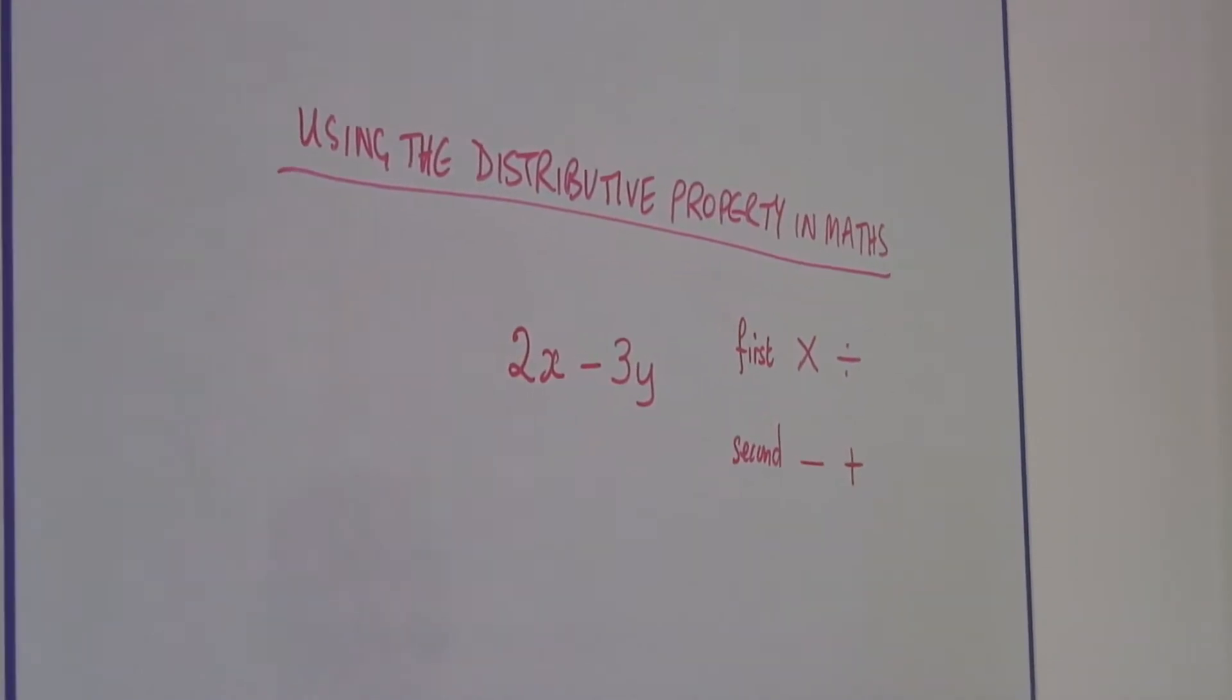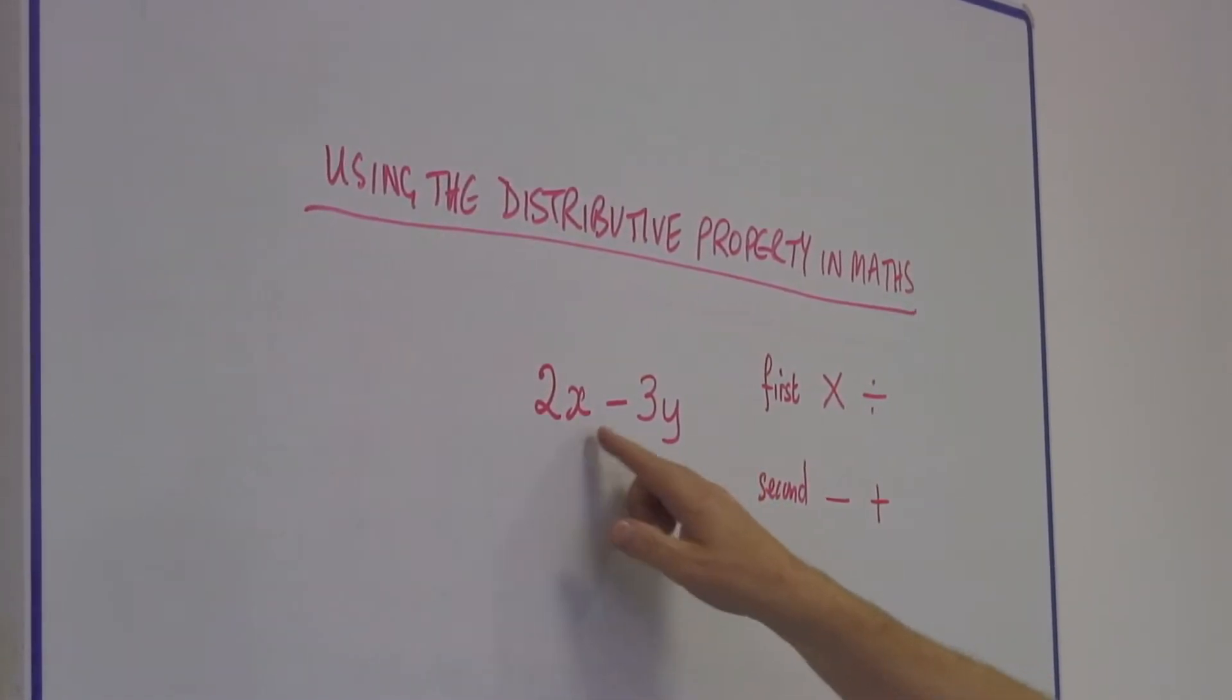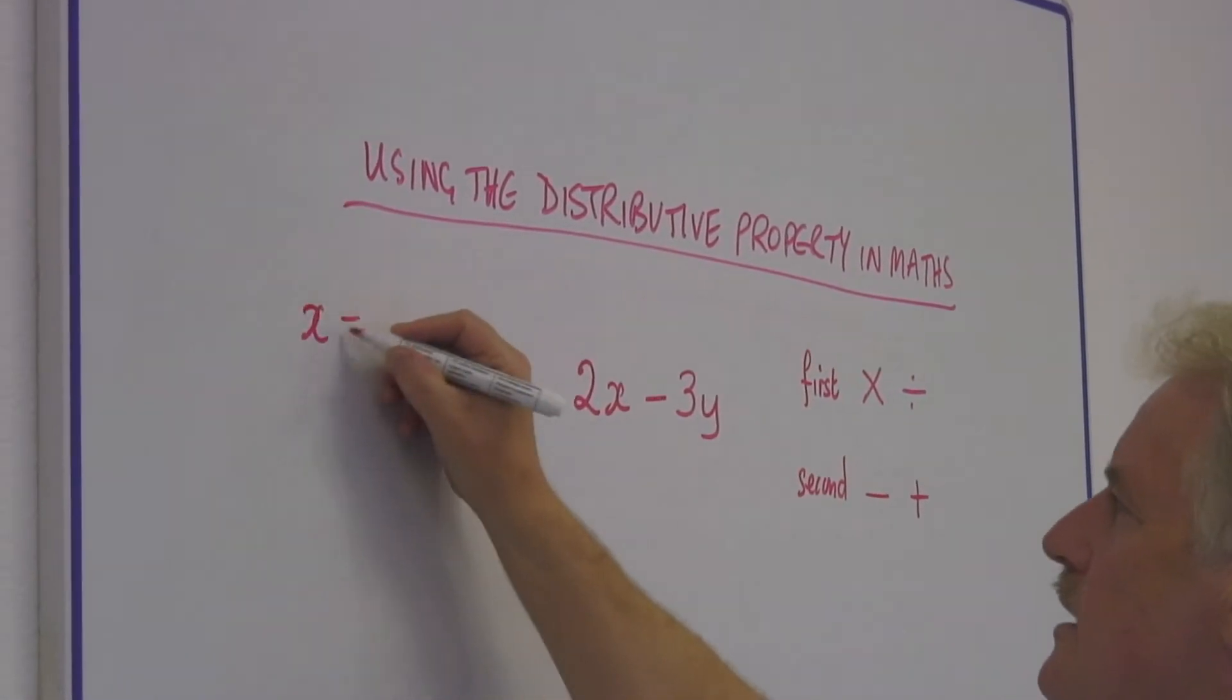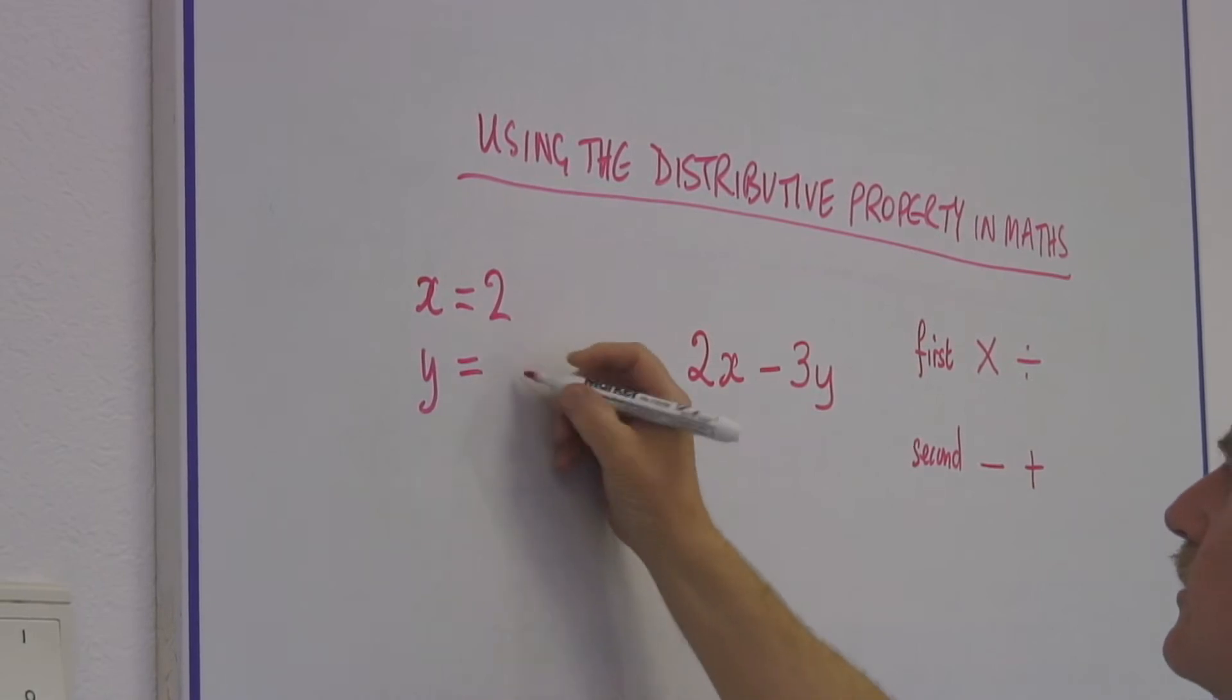So if I do these functions, this is 2x minus 3y. Let's give x and y values. x is 2, y is 3.